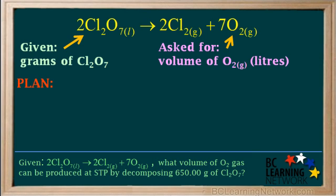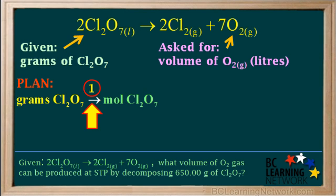So we write a plan of our steps. We start with grams of Cl2O7, which we're given. Since we're given a quantity of Cl2O7 and asked for a quantity of O2, we are moving from one substance to another. Whenever we do that, we need to convert the given quantity to moles. So our first step is to convert grams of Cl2O7 to moles of Cl2O7.